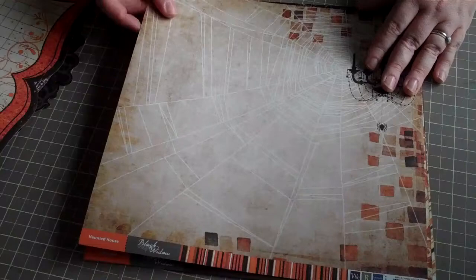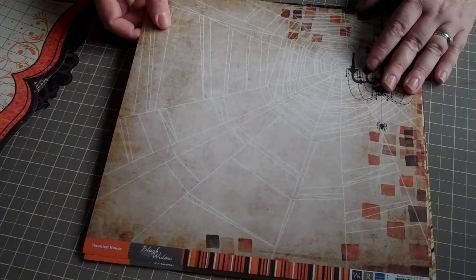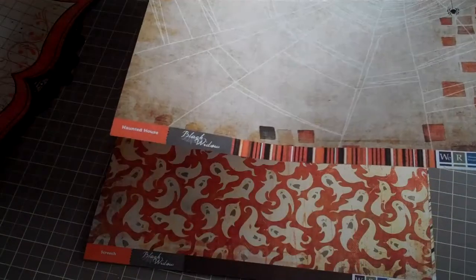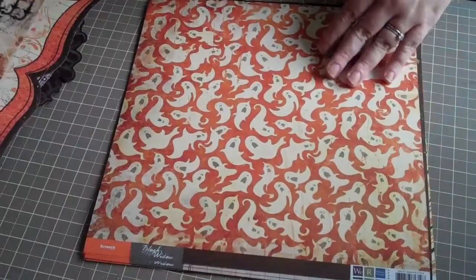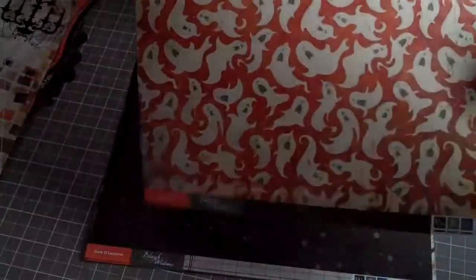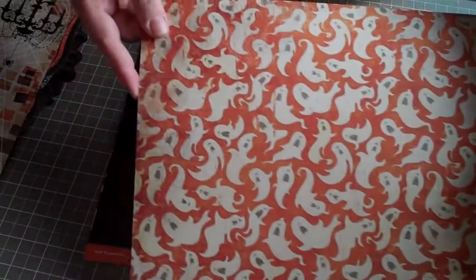Next we have the pattern papers that come with the Black Widow collection. This one is titled Haunted House, and the back has a really nice stripe pattern, which is great. The next one is Screech, with all these fun ghosts, and the back side is a nice brown that you can use as a base.